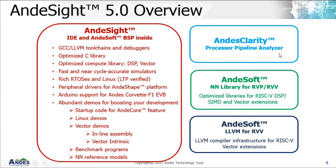On the right-hand side you can see AndesKlarity, which is a processor pipeline analyzer plugin. This is a powerful plugin that lets you analyze your pipeline and instruction stages from the instruction fetch phase until the execution stage. Below that is AndesSoft, which is the NN library for RVP — the P extension, the DSP extension for SIMD — and RVV, which is the RISC-V vector extension.